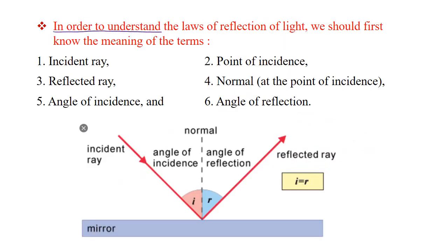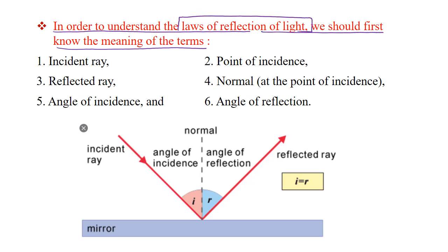In order to understand the laws of reflection of light, we should first know the meaning of certain terms. हमें law of reflection पढ़ने से पहले कुछ terms की meaning समझनी है: first — incident ray, second — point of incidence, third — reflected ray, fourth — normal, fifth — angle of incidence, and sixth — angle of reflection. इन्हें हम एक picture के द्वारा आसानी से समझ सकते हैं.